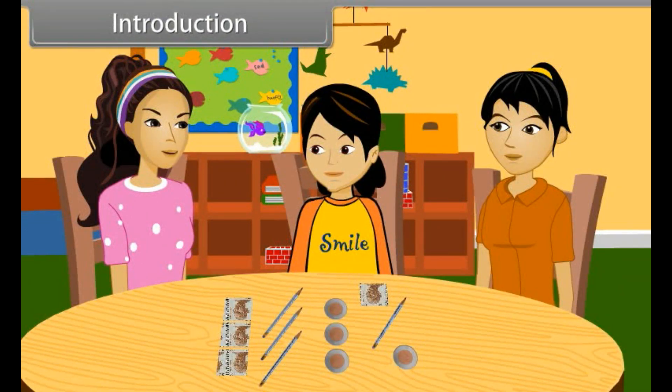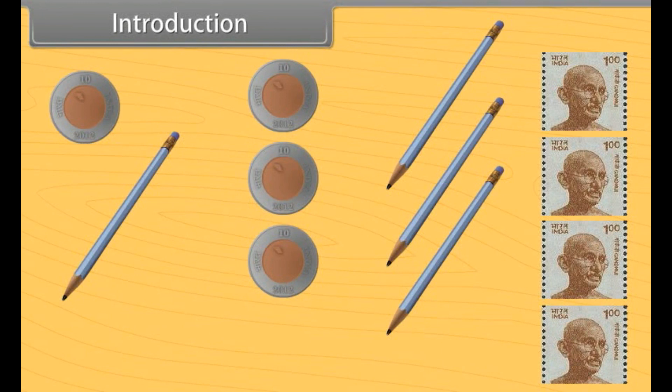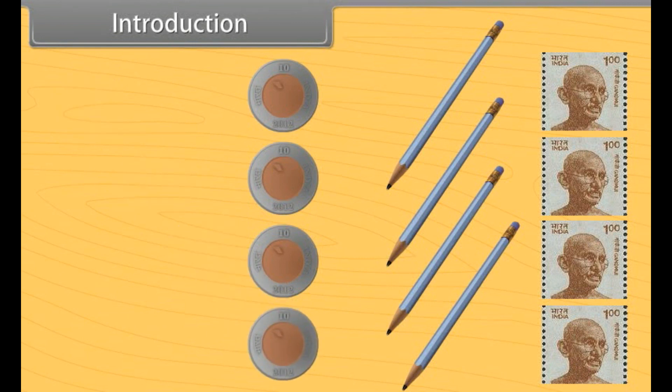Priya, can you tell which of these things belong to which set? Yes, it is so simple. Stamp will go in the set of stamps. Pencil belongs to the set of pencils. And this coin belongs to the set of coins.